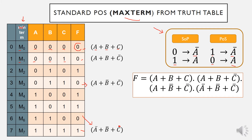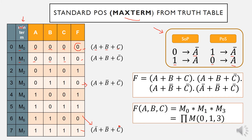We can also represent this expression using max term format based on the large M symbol. We select the low outputs and their respective M terms — M0, M1, M3, and M6 — giving us our max term expression for product of sum.